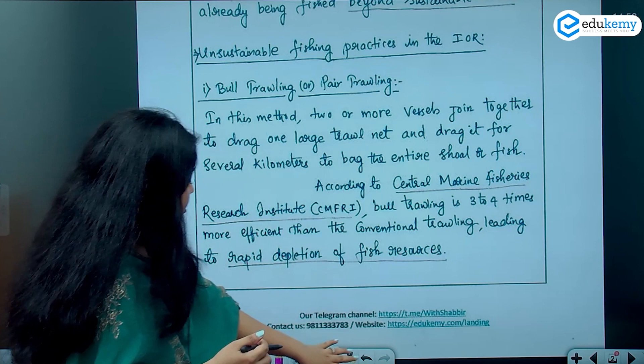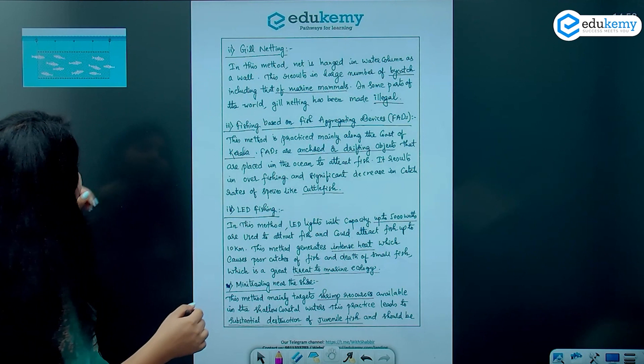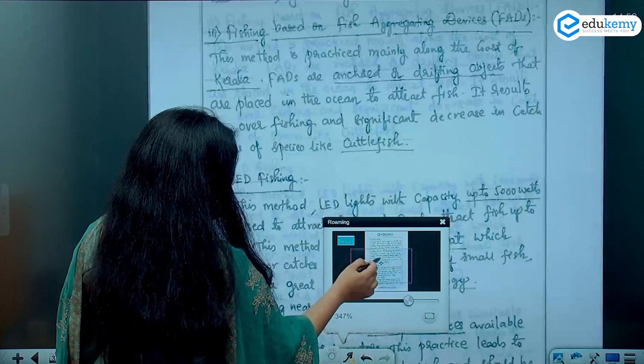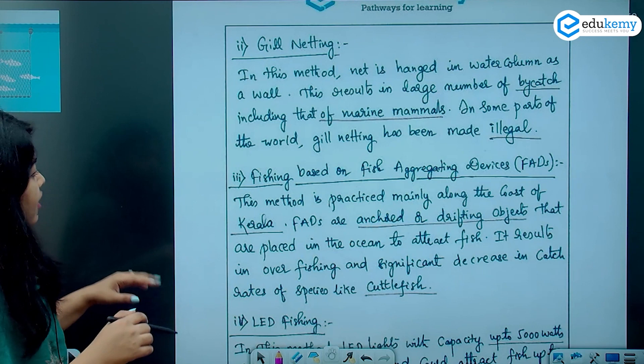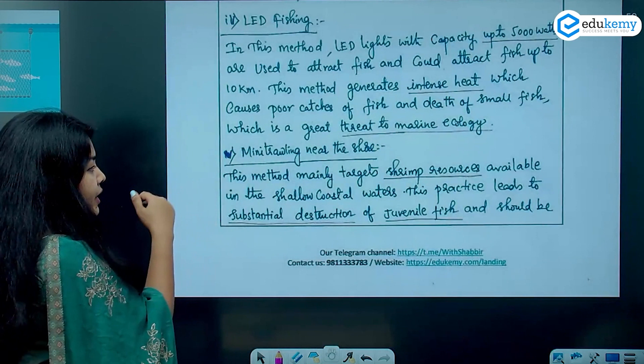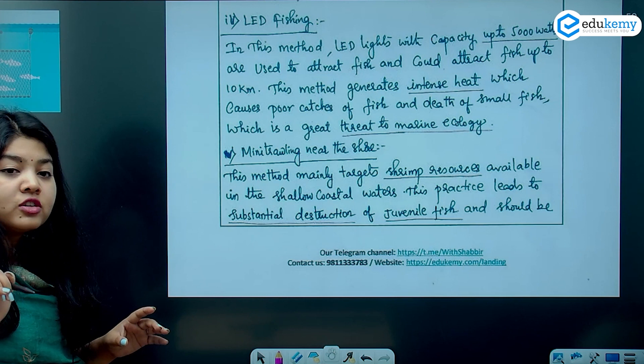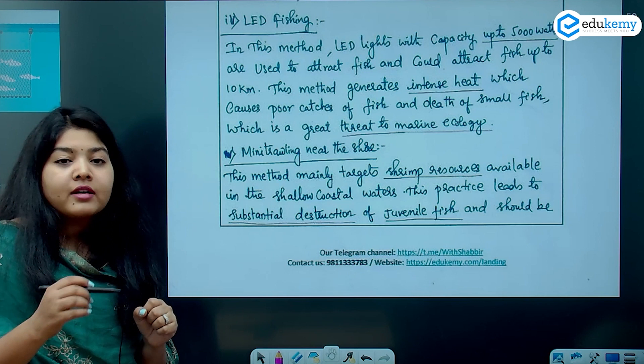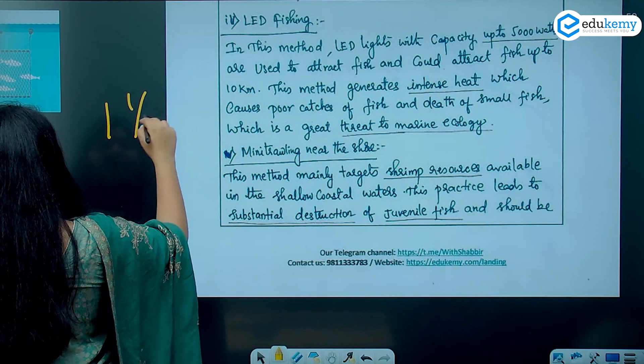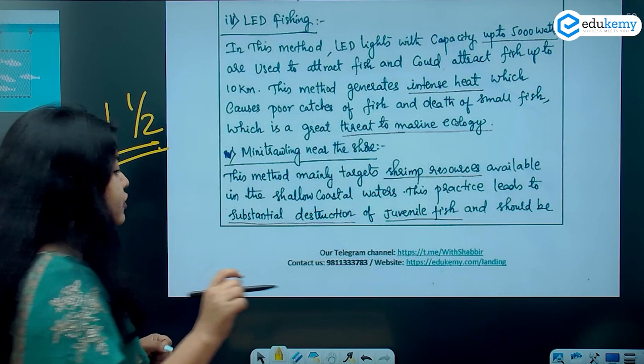The body covers gill netting, fishing based on fish aggregating devices, LED fishing, and mini trawling near the shore. These address the first part of the question on unsustainable fishing practices in the Indian Ocean region. However, you have already used one and a half pages for just the first part, and the purse seine fishing section has not even started yet — it begins only on the third page.